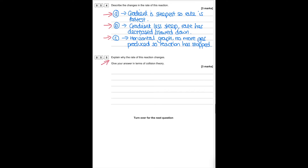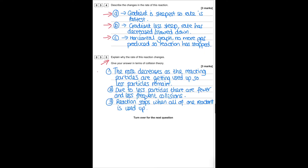Explain why the rate of reaction changes in terms of collision theory. The rate decreases as reactant particles are used up, so fewer particles remain. Due to fewer particles there are less frequent collisions. The reaction stops when all of one reactant's particles are used up.